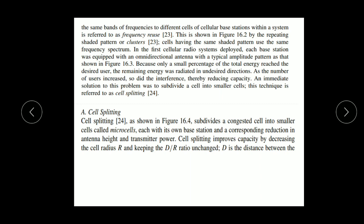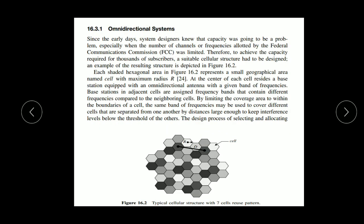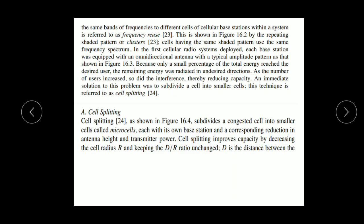This is shown in the figure by repeating the selected pattern or cluster. The same color cells represent the cluster. In the first cellular radio system deployed, each base station was equipped with an omnidirectional antenna. Because only a small percentage of total energy reached the desired user, the remaining energy was radiated in undesired locations. As the number of users increased, so did the interference, thereby reducing capacity. An immediate solution was to subdivide a cell into smaller cells — a technique referred to as cell splitting.